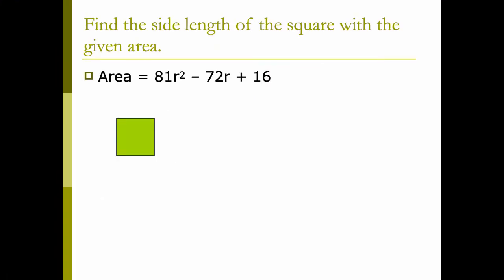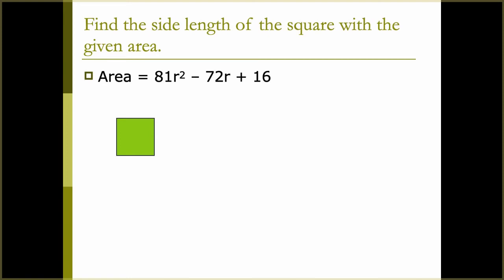Find the side length of the square with the given area: 81r² - 72r + 16. To find the area of a square, both side lengths are the same, so we need to factor this expression. The first and last terms are both perfect squares. The square root of 81r² is 9r, and the square root of 16 is 4. The middle term is negative, so we have (9r - 4)². To verify: 9r × (-4) = -36r, doubled gives -72r, which matches.